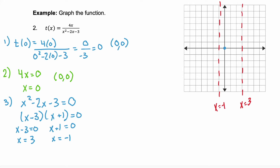Step four is to find any horizontal asymptotes. The numerator has degree 1 and the denominator has degree 2 — that's a squared term. Since n is less than m, the degree of the numerator is smaller than the degree of the denominator, so y equals 0 is the horizontal asymptote. We can put that on.